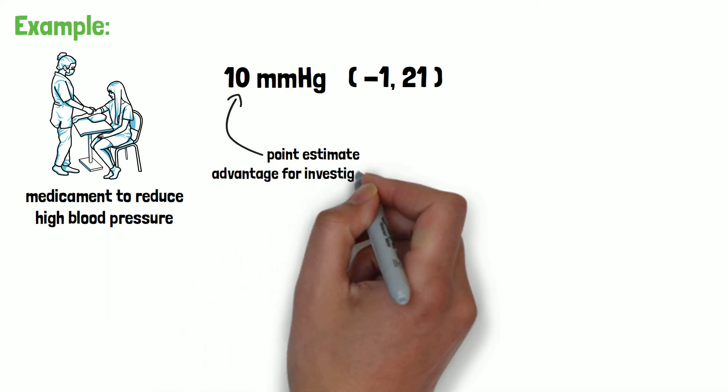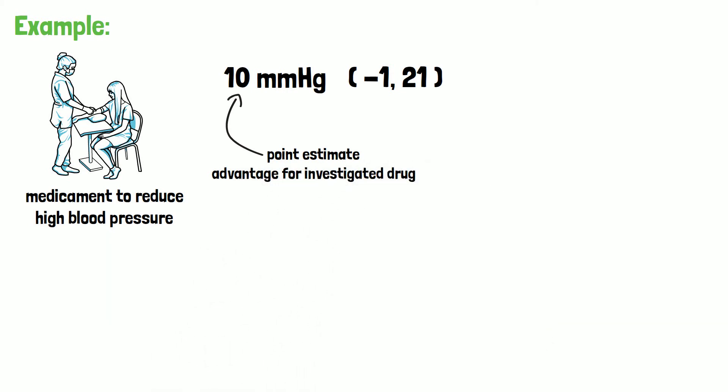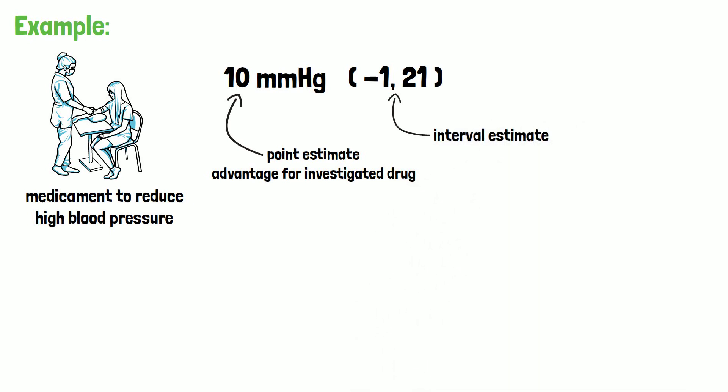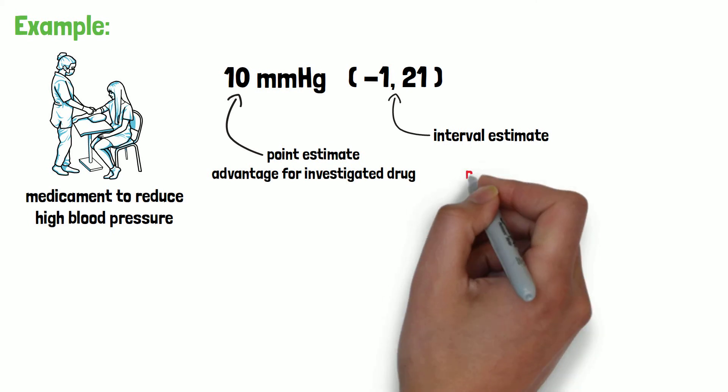So the point estimate shows an advantage for the investigated drug. The interval estimates, in contrast, indicate that the estimated effect lies between minus 1, which indicates a small advantage for the comparison treatment, and 21, which indicates a major improvement for the investigated treatment.